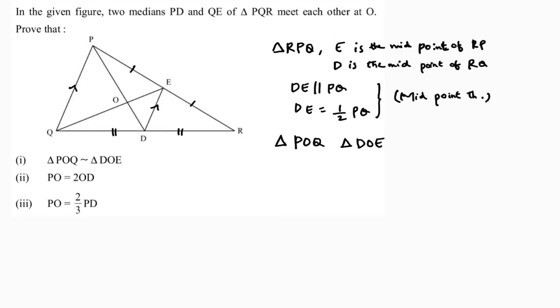In triangle POQ, angles 1 and 2 are forming a Z shape, so angle 1 equals angle 2 by interior alternate angles because DE is parallel to PQ and PD is a transversal.